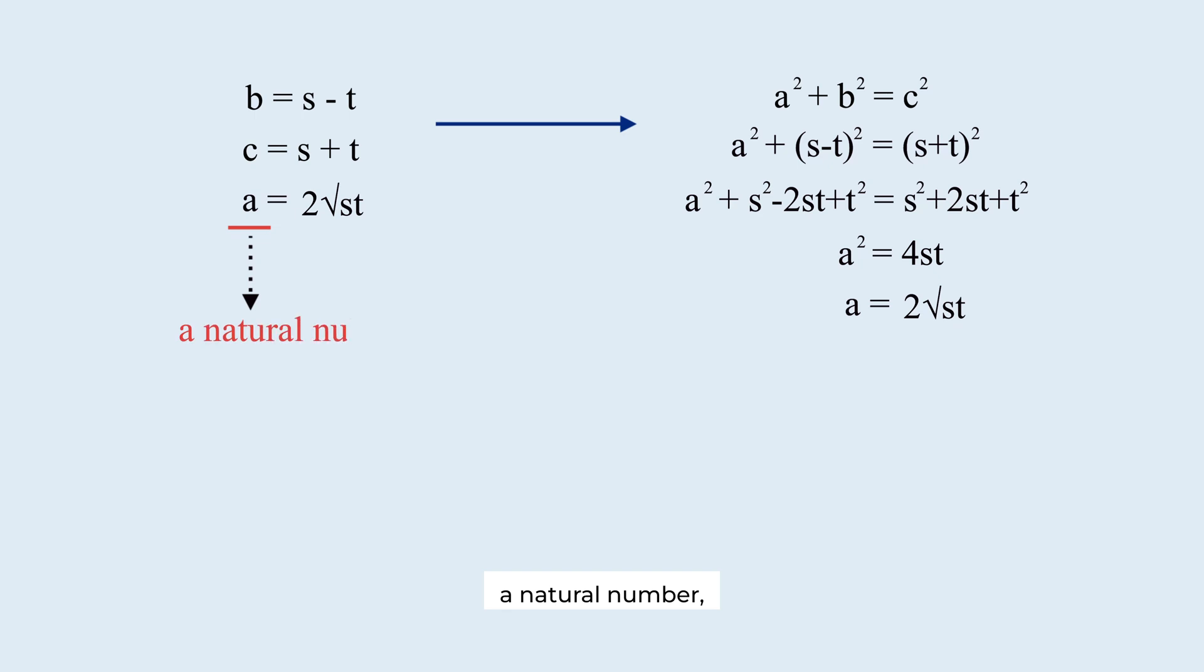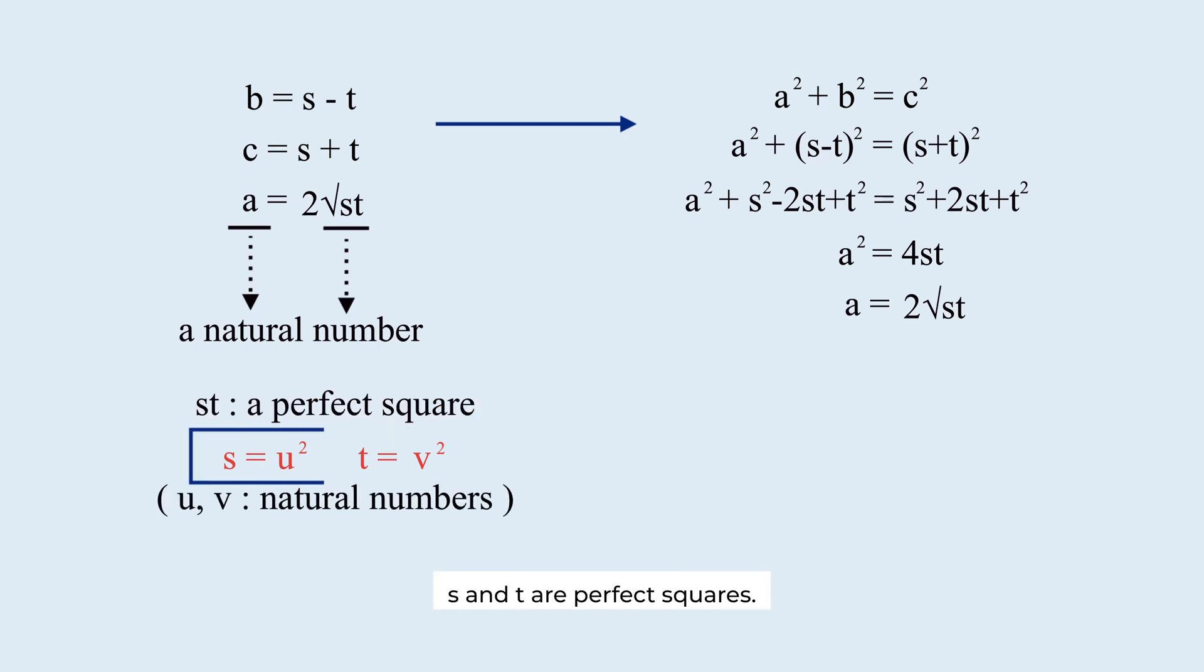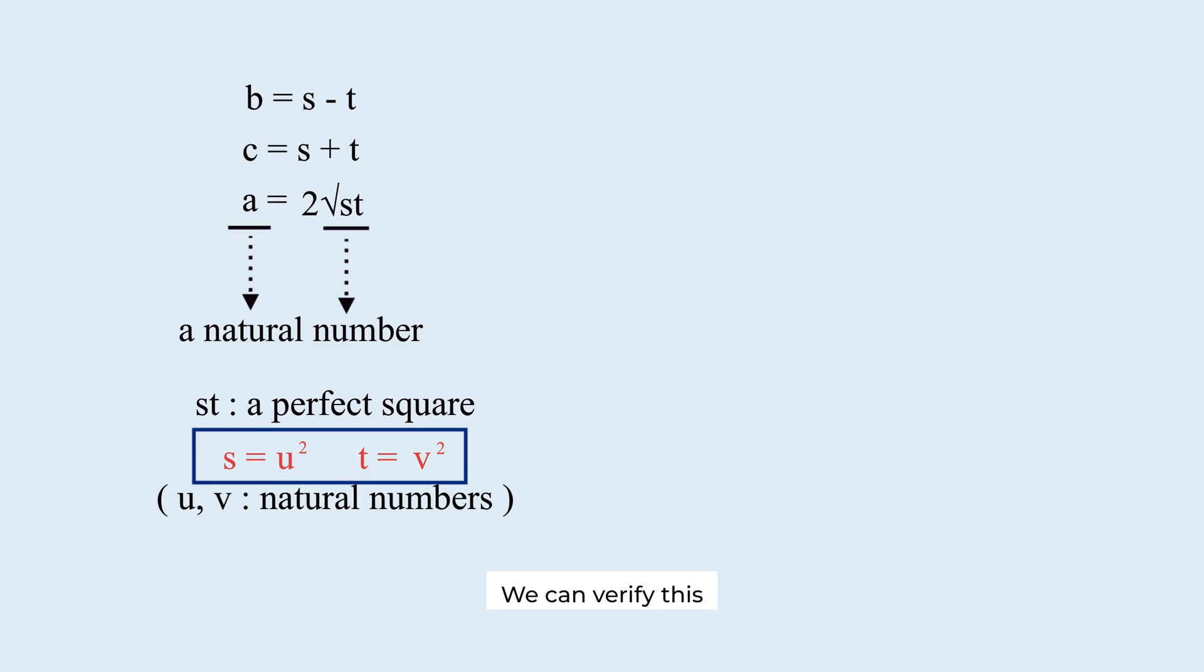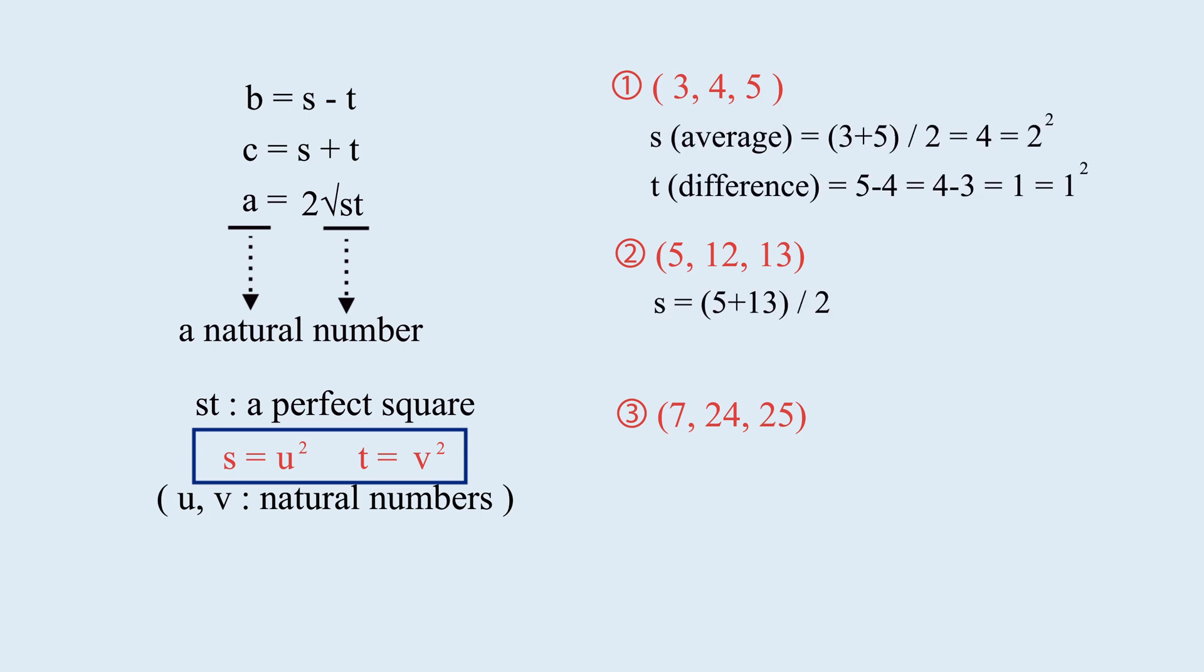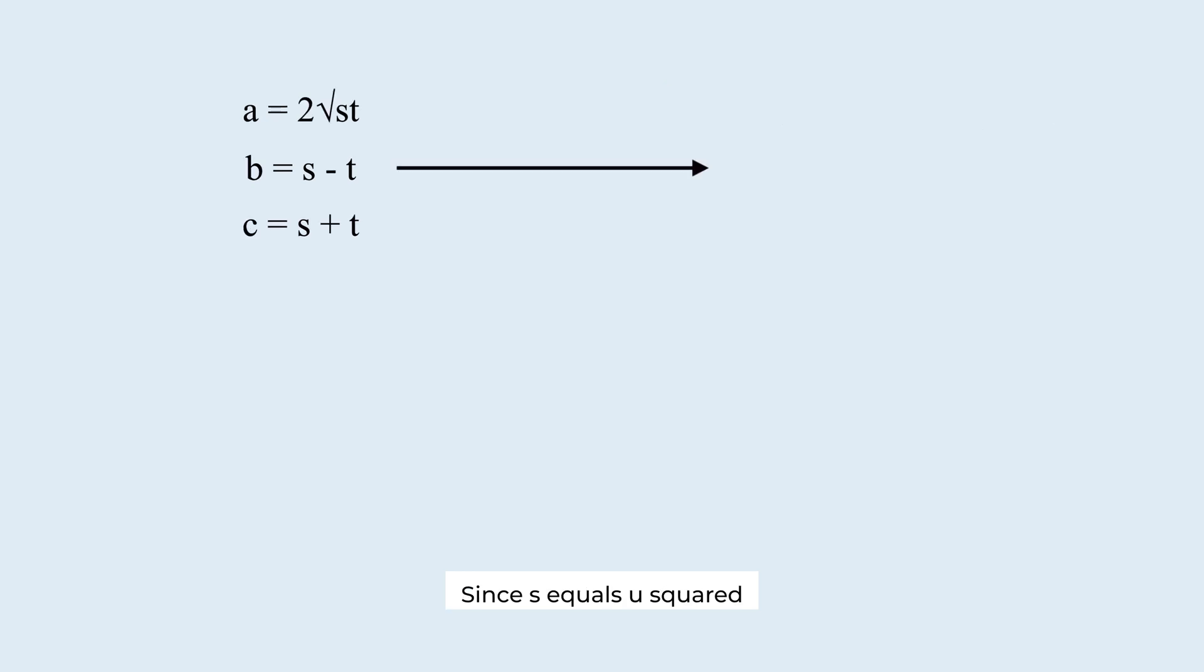But, since a must be a natural number, root st must also be a natural number. That means, st must be a perfect square. So, s must be u squared and t must be v squared, where u and v are natural numbers. Take a look. s and t are perfect squares. We can verify this with real examples. It's very interesting. Since s equals u squared and t equals v squared, we can express the triple like this. All three numbers are now written entirely in terms of u and v.